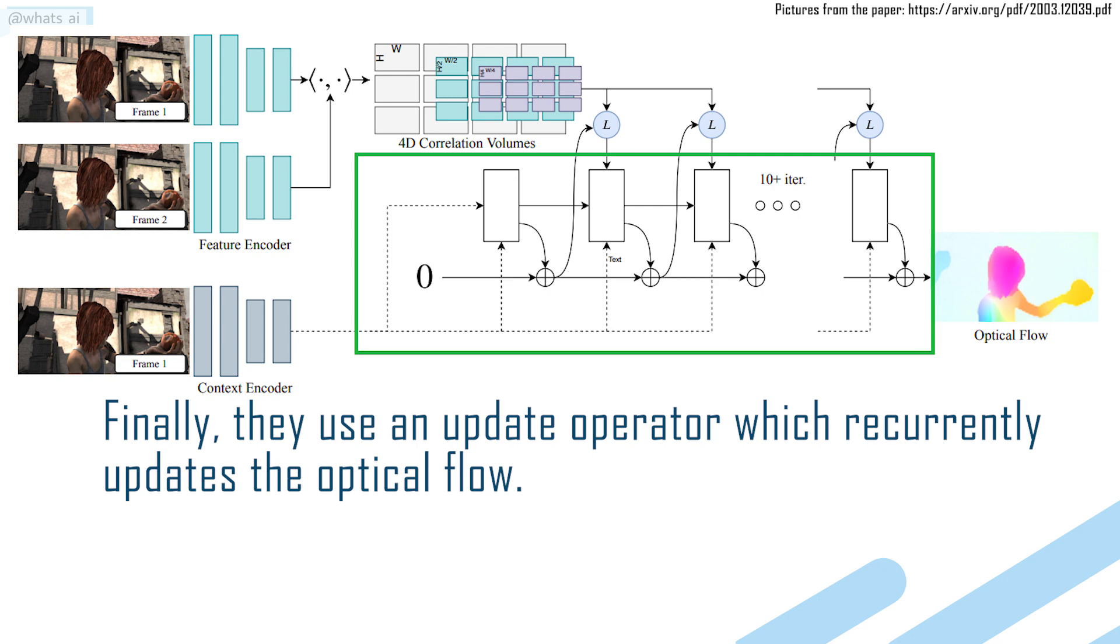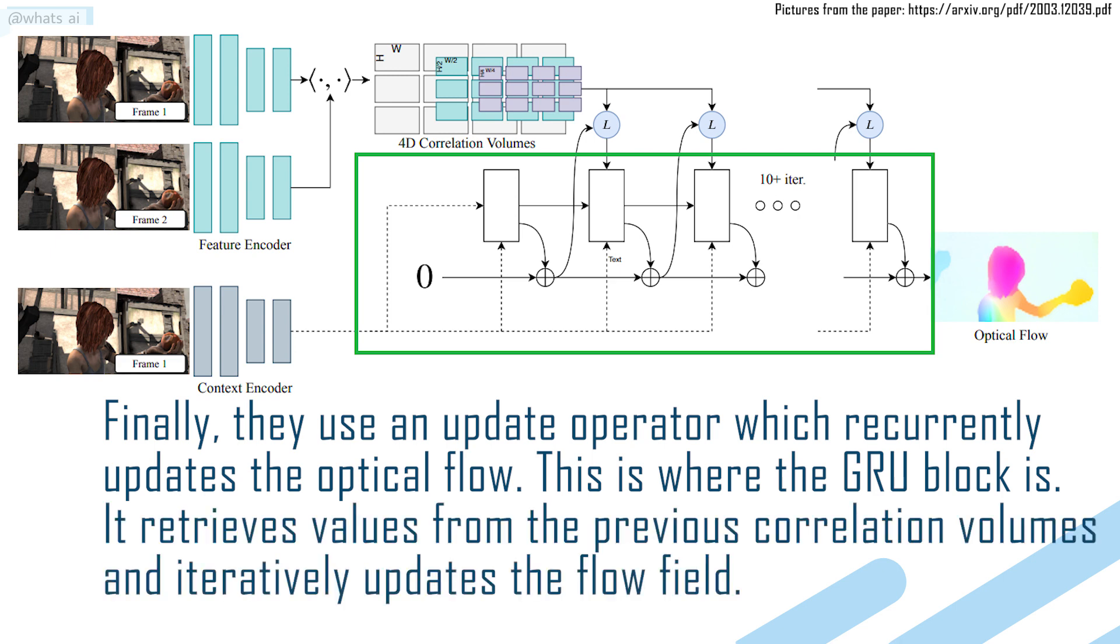Finally, they use an update operator, which recurrently updates the optical flow. This is where the GRU block is. It retrieves values from the previous correlation volumes, and iteratively updates the flow field.